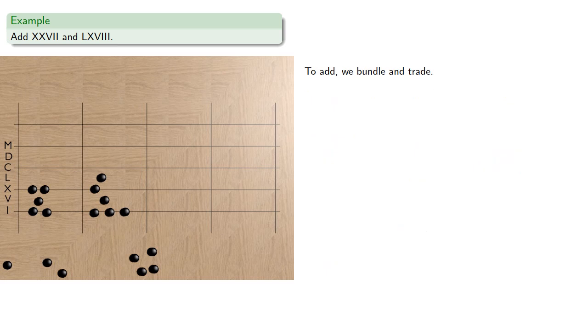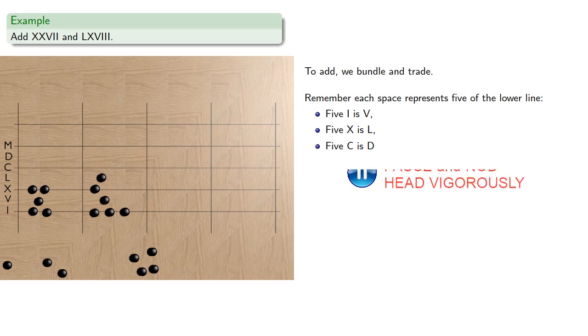Remember each space represents five of the lower line. 5I is V, 5X is L, 5C is D. And each line is two of the lower space. 2V is X, 2L is C, and 2D is M.